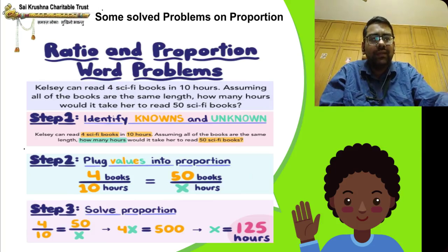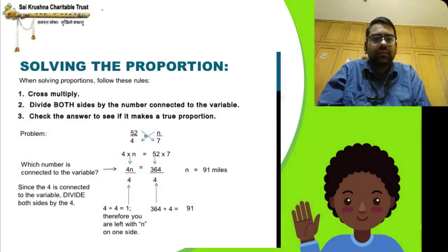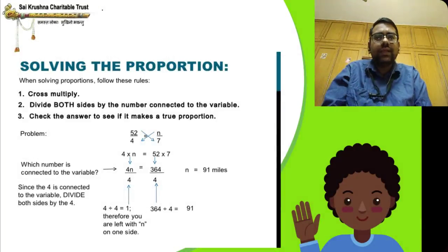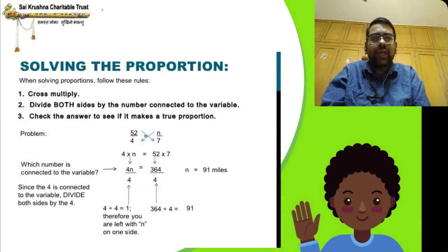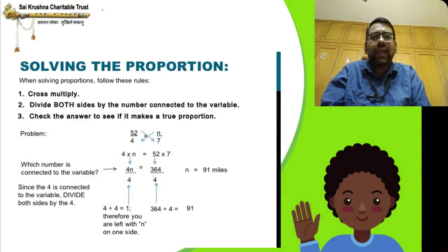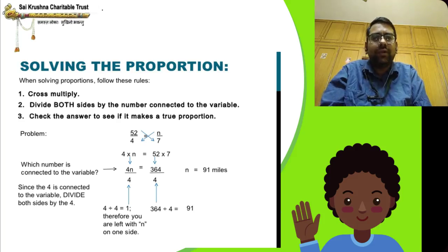Some more examples are given here on solving proportions. While solving a proportion, follow these rules: First, cross multiply. Second, divide both sides by the number connected to the variable. Third, check the answer to see if it makes a true proportion.